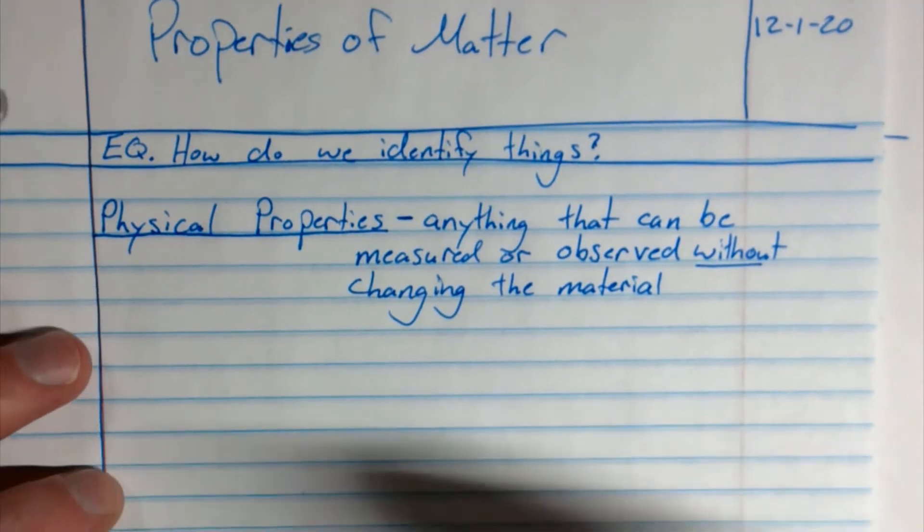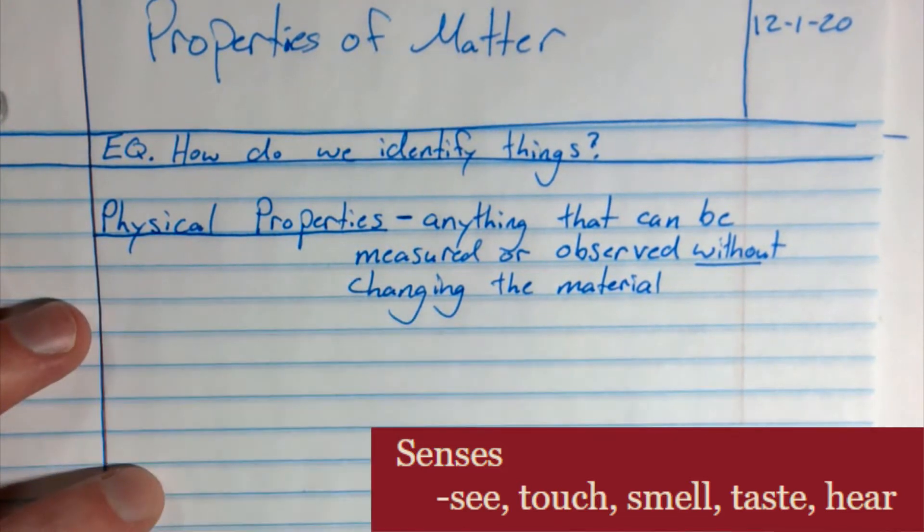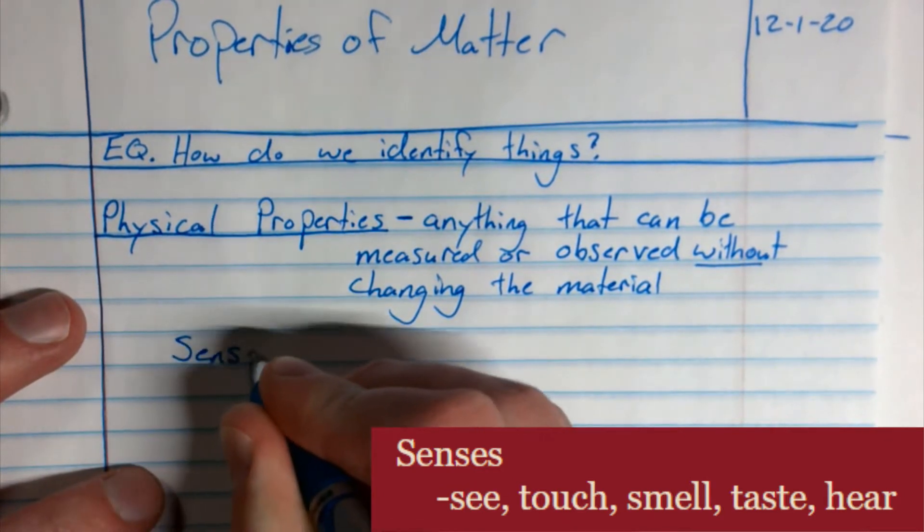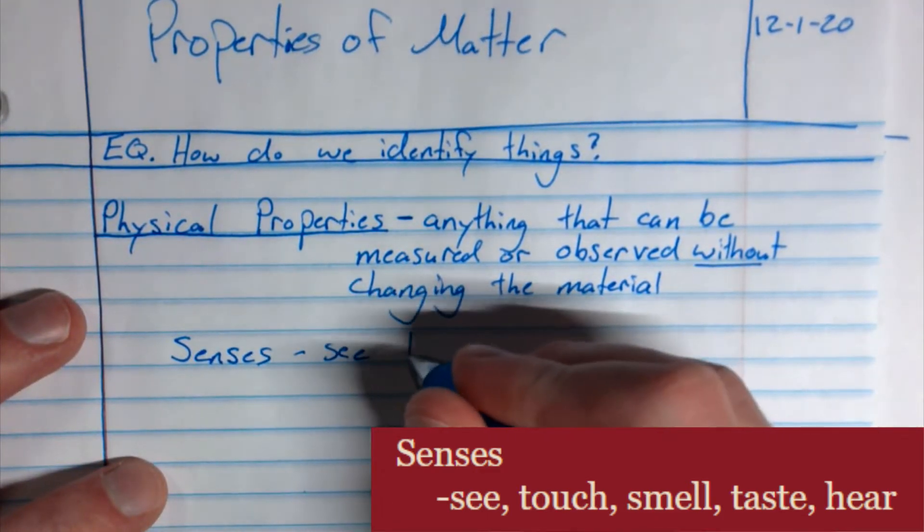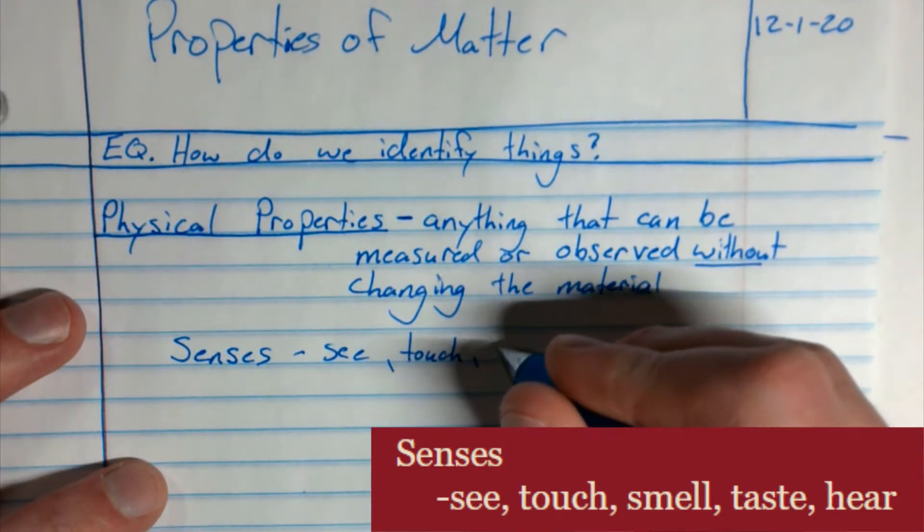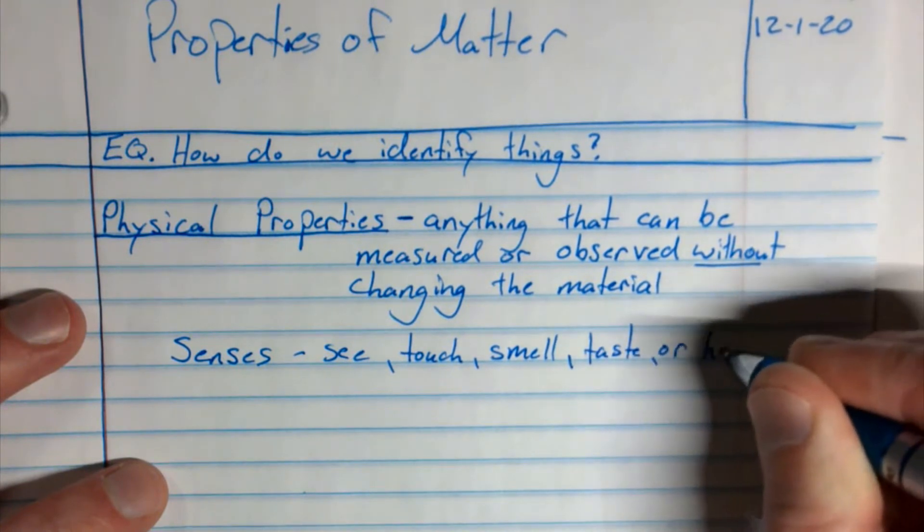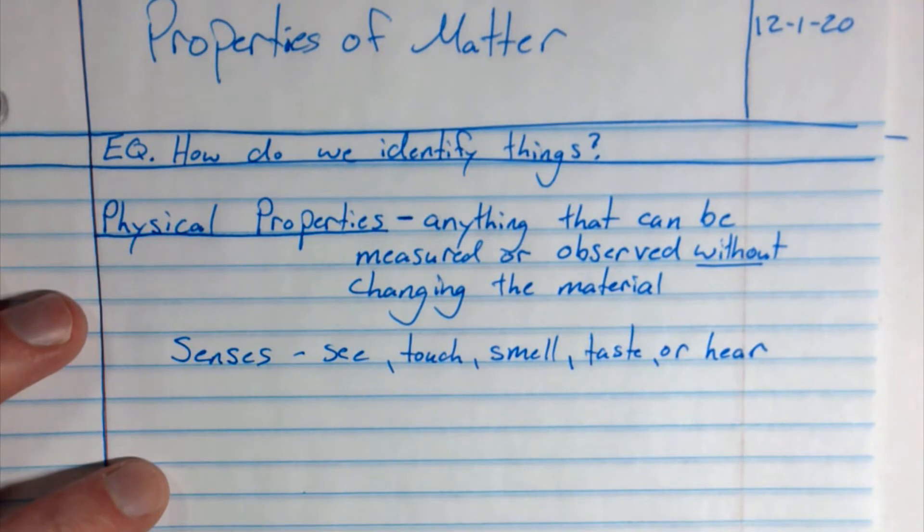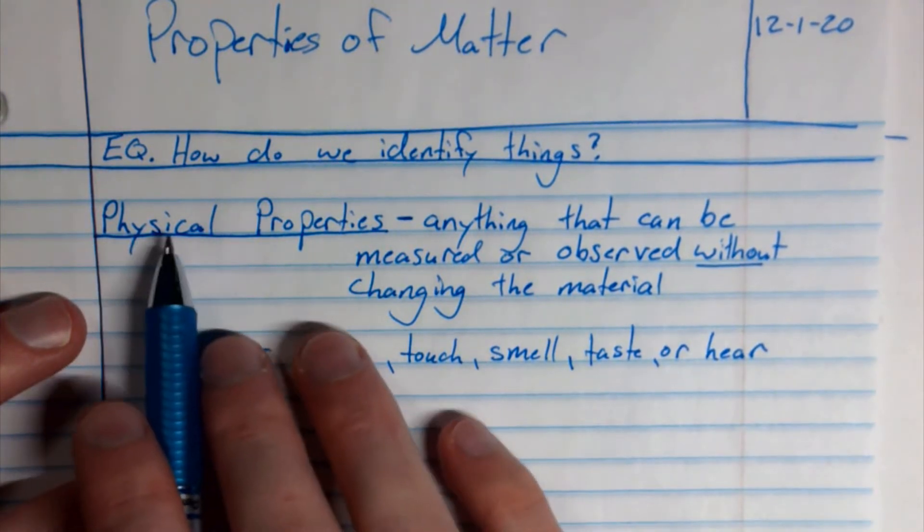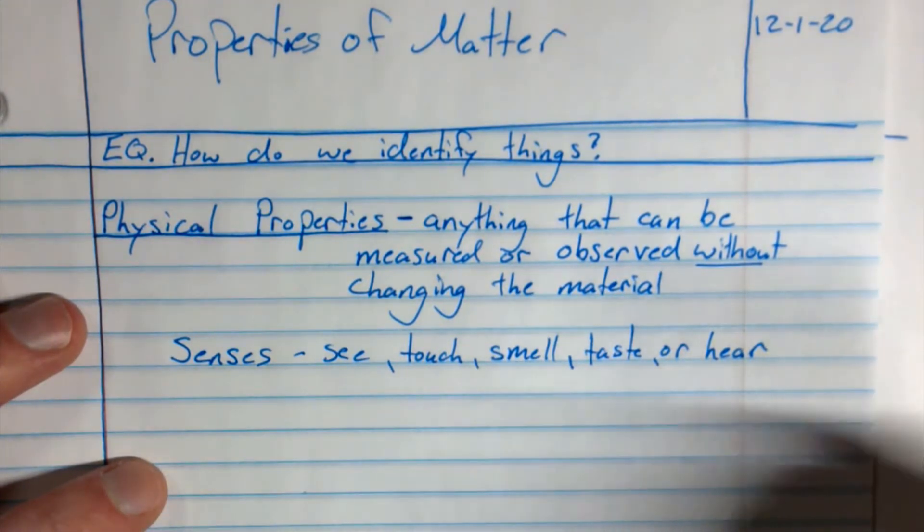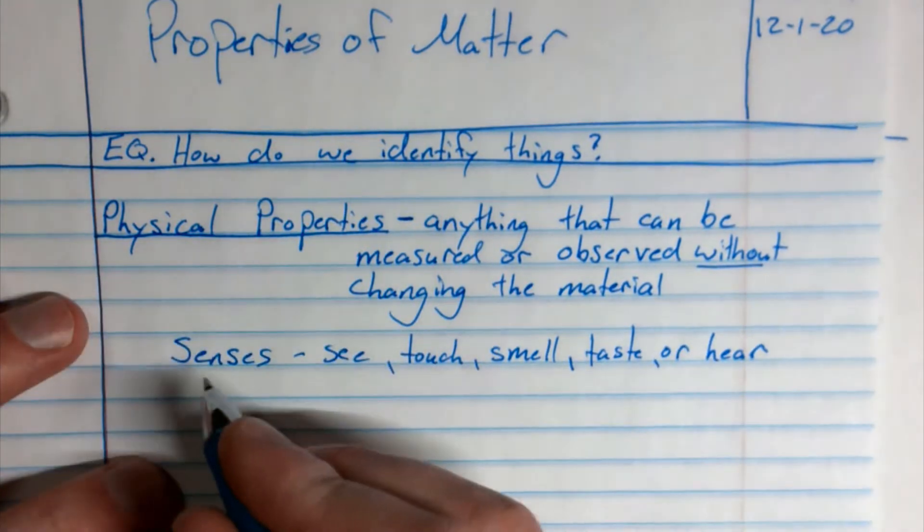Now there's a lot we need to add to physical property because there's a lot of ways that we can determine whether something's a physical property or not. So one of the ways is with our senses, which include what I can see, touch, smell, taste, or hear. Now in the lab we are not going to taste anything because that's one of our rules. But we can definitely see, touch, and smell or even hear different things that might tell us that it's something different.